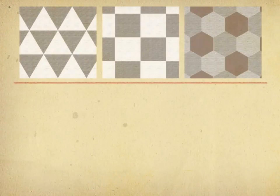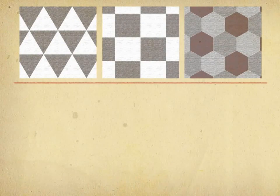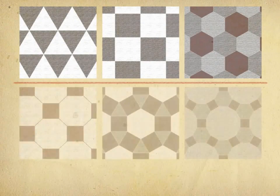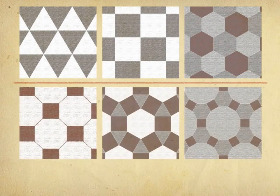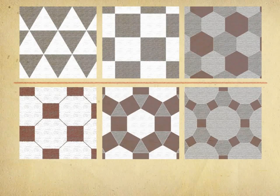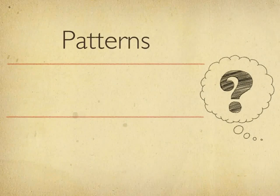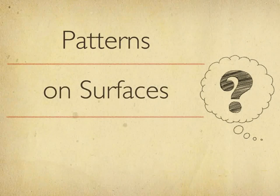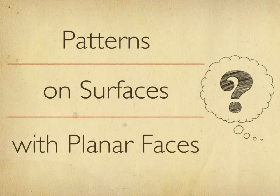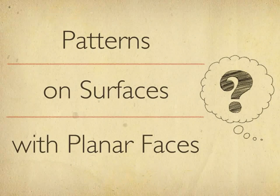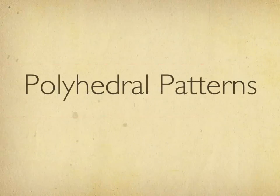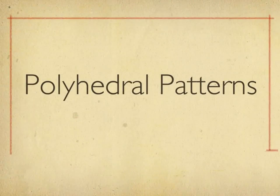A plane can be tiled with a single type of polygon or multiple types of polygons. For architectural design and fabrication, we study such patterns on surfaces and aim for planar faces. We call them polyhedral patterns.